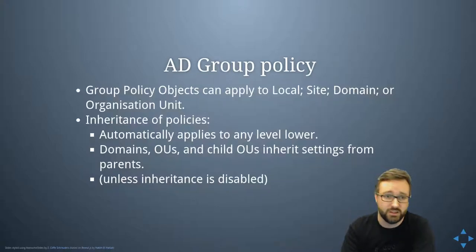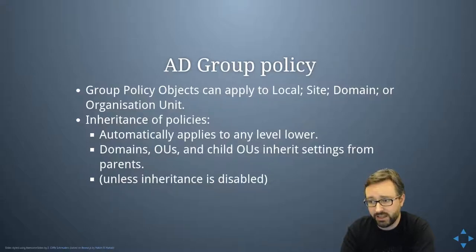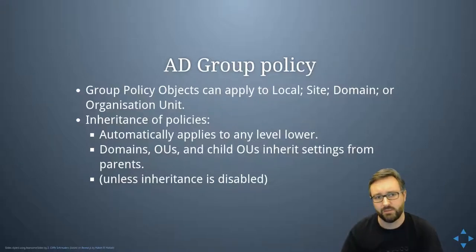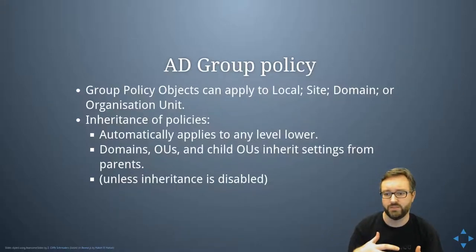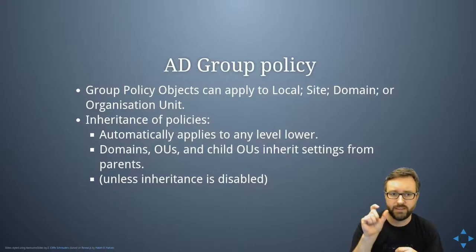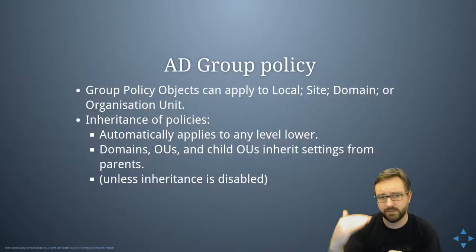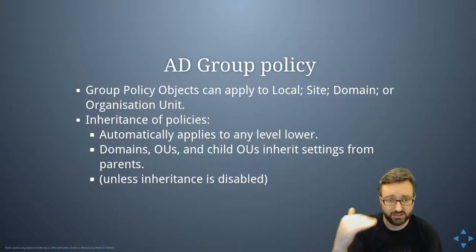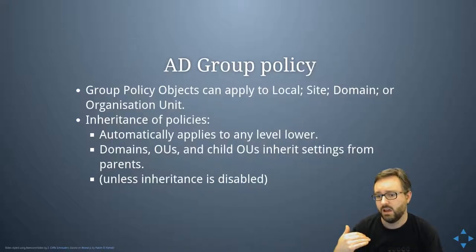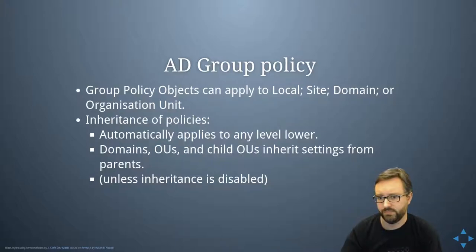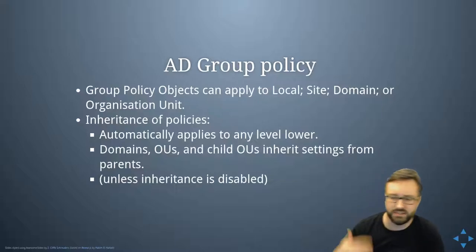Group Policy Objects can apply rules at the site, domain, or organizational unit level. Policies are inherited, so anything set at a higher level automatically applies to the lower levels - domains, organizational units, and child organizational units all inherit settings from their parents, unless you explicitly disable inheritance.